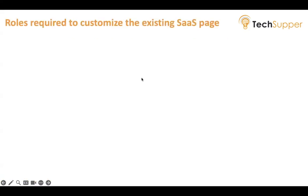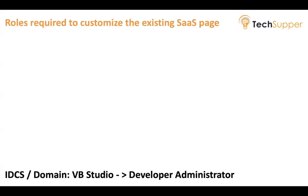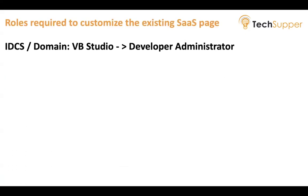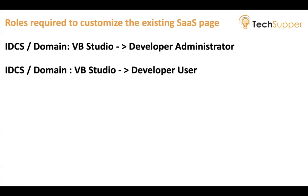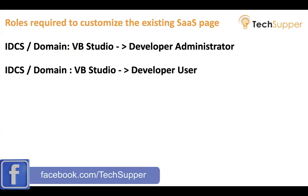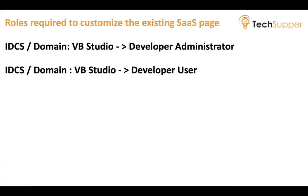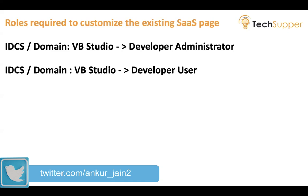Before we discuss what roles are required, we will discuss two different roles. One is called Developer Admin and the second is called Developer User. When VB Studio is provisioned via PaaS system — and the same thing happens in SaaS also — whenever VB Studio is getting provisioned, in IDCS or domain there will be two roles created against that VB Studio: Developer Administrator and Developer User. These are the roles that are actually required to access VB Studio.